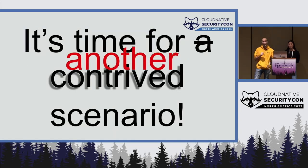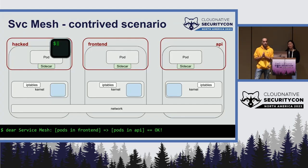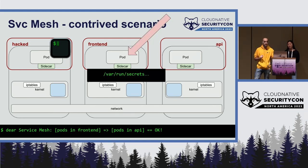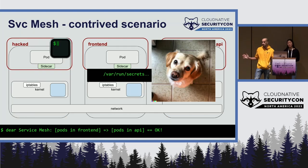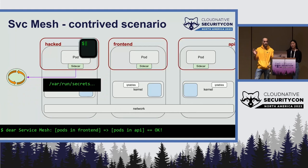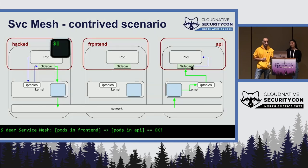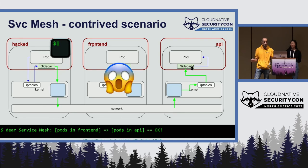Here's another contrived scenario. Say an attacker has popped a shell in a vulnerable pod that doesn't have access to your API. If they can find a vulnerability that lets them steal the service account token from a sidecar — maybe through directory traversal, server-side request forgery, or however it's done — they could use that stolen token to talk to the service mesh controller and request a client certificate, then use that certificate to make a fully encrypted and verified connection to a pod you thought was unreachable. There's a repo that shows step-by-step how to do this.